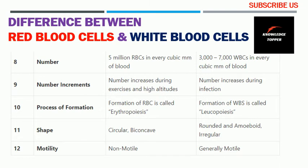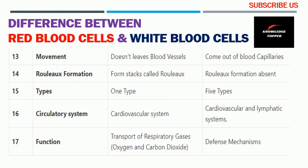The twelfth basis is motility — red blood cells are non-motile, while white blood cells are generally motile. The thirteenth basis is movement — red blood cells do not leave blood vessels, while white blood cells can exit blood capillaries. The fourteenth basis is rouleaux formation — red blood cells form rouleaux, while this formation is absent in white blood cells.